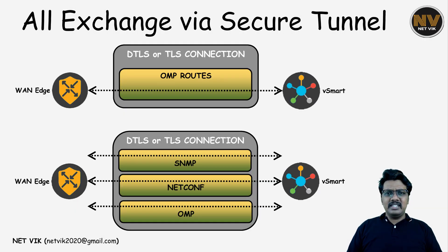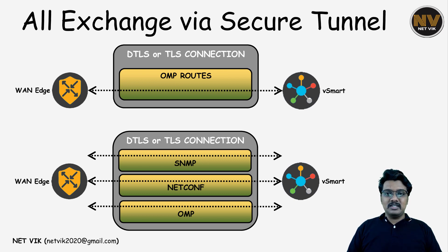After the DTLS or TLS-based control plane tunnel is successfully established, every communication — including OMP route updates, policy exchange, or any other netconf session — will be communicated via the secured DTLS or TLS tunnels, which makes everything secured in Cisco SD-WAN.